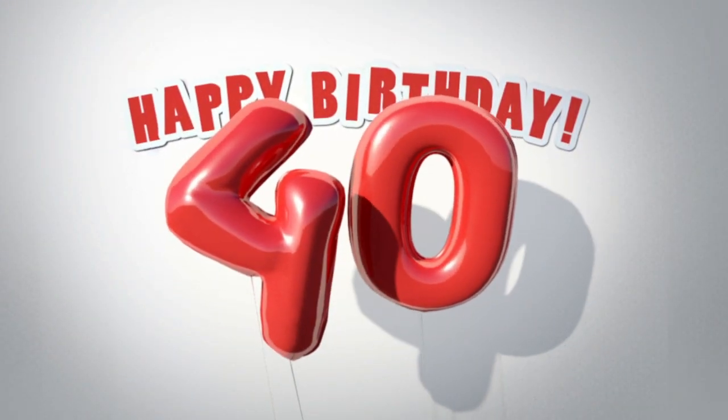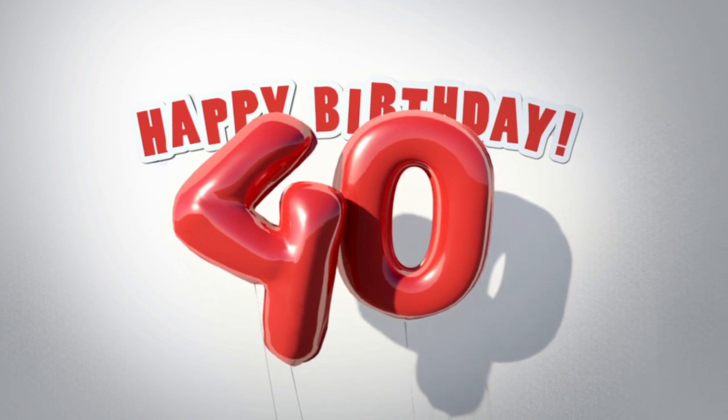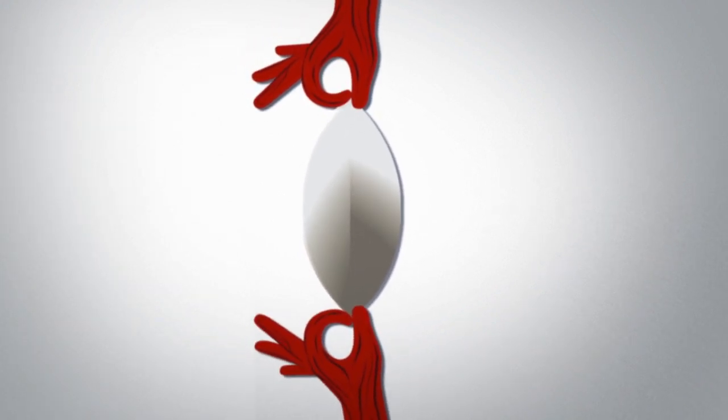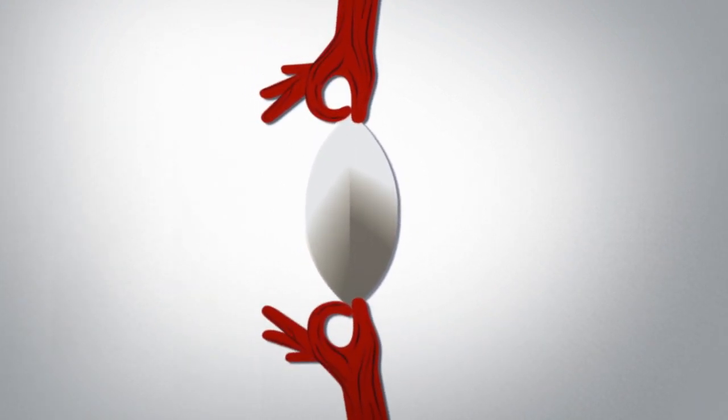By your early 40s, your lenses will lose enough elasticity that you'll probably notice when you read at a normal distance. Eventually, they'll barely flex at all. But it's normal, even if you've always had perfect vision.